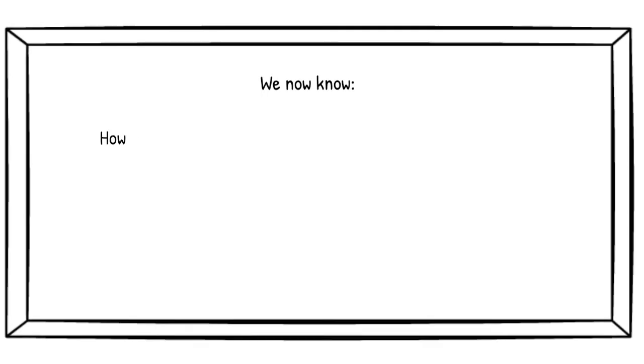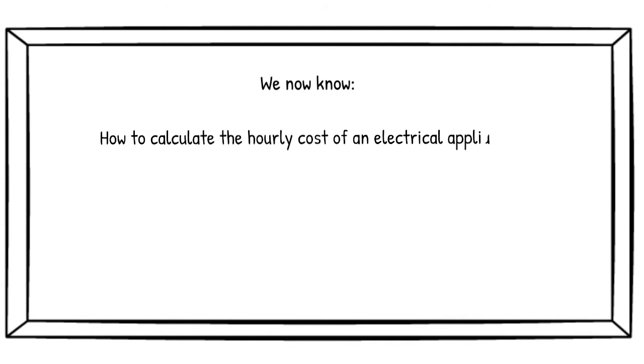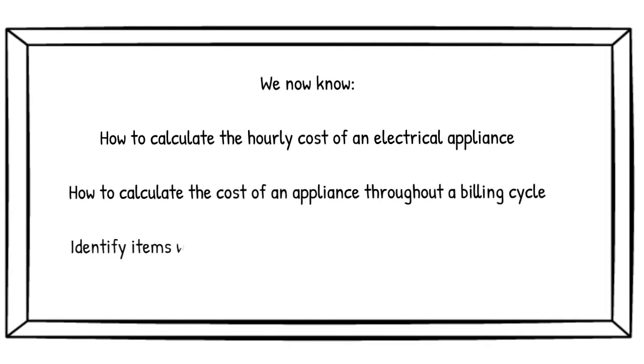Here's an overview of what we now know. We can now understand how much an item can cost to run. We can also now calculate the item cost throughout a billing cycle. And we can also use these calculations to identify items we may want to use less, and to preempt future usage.